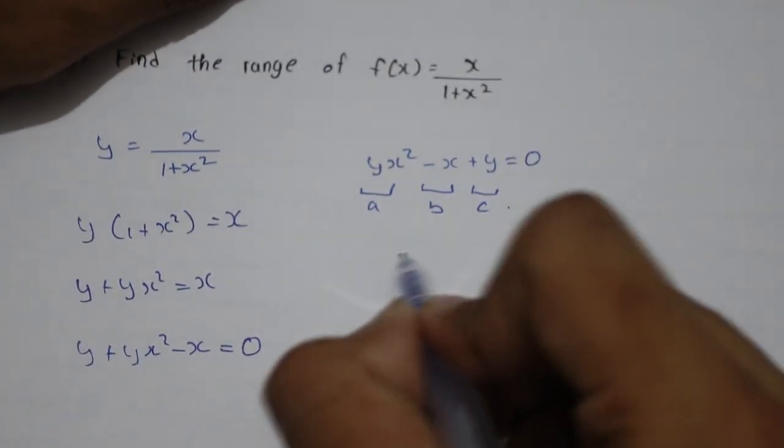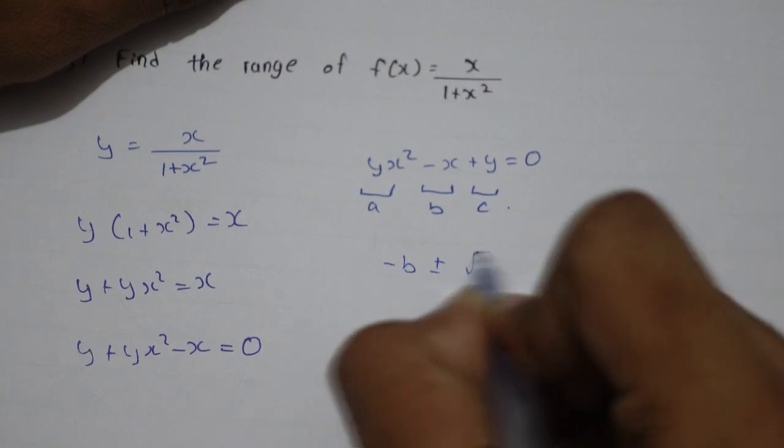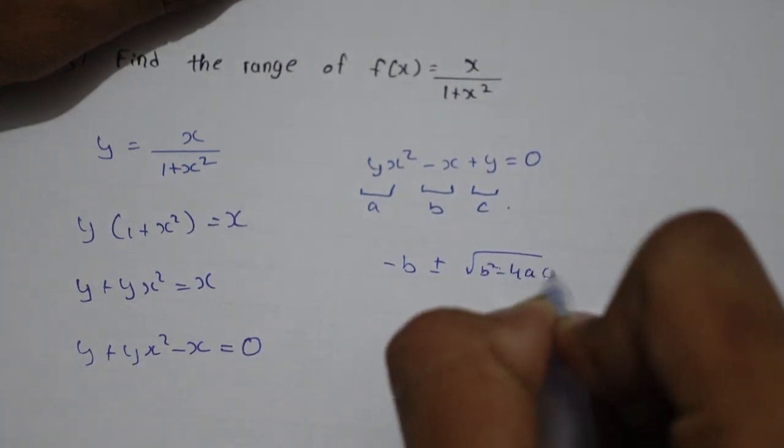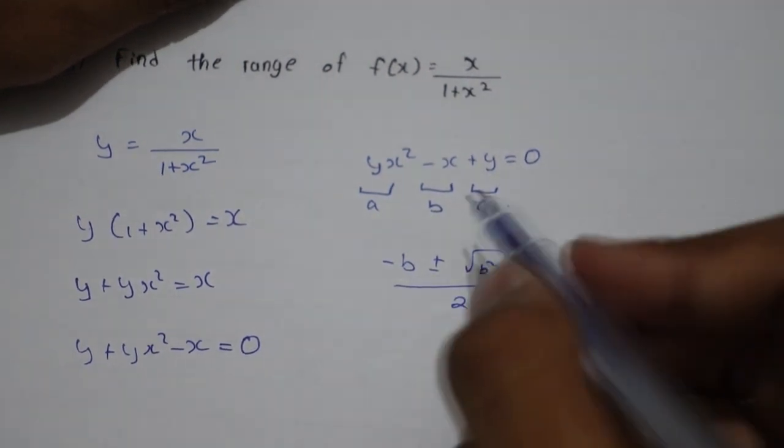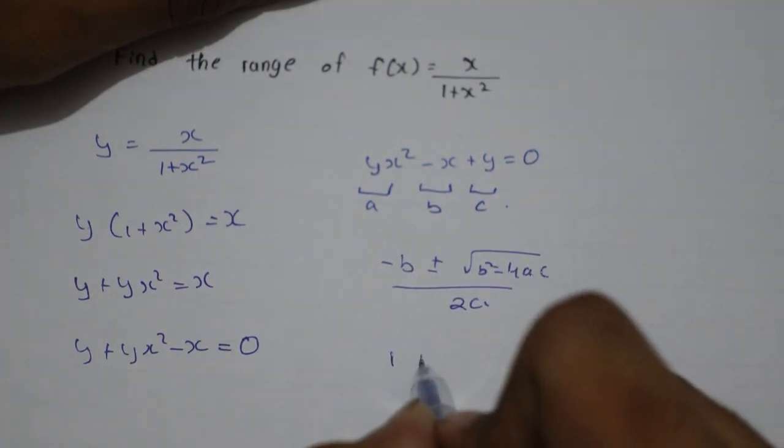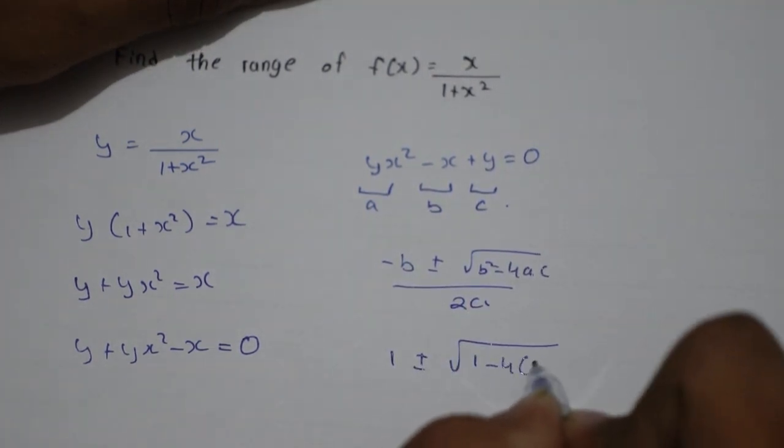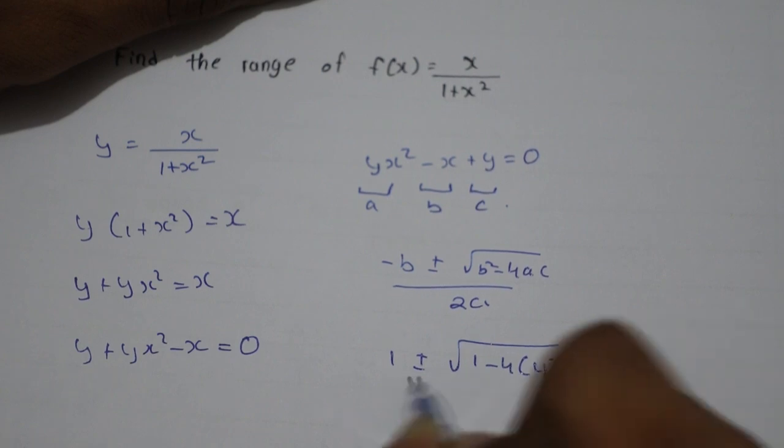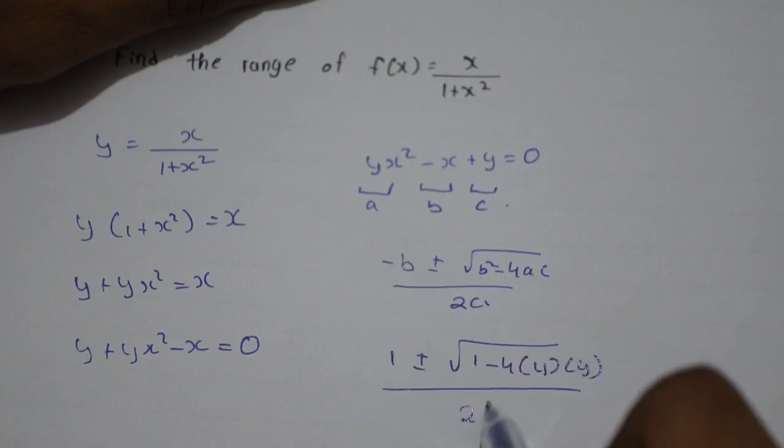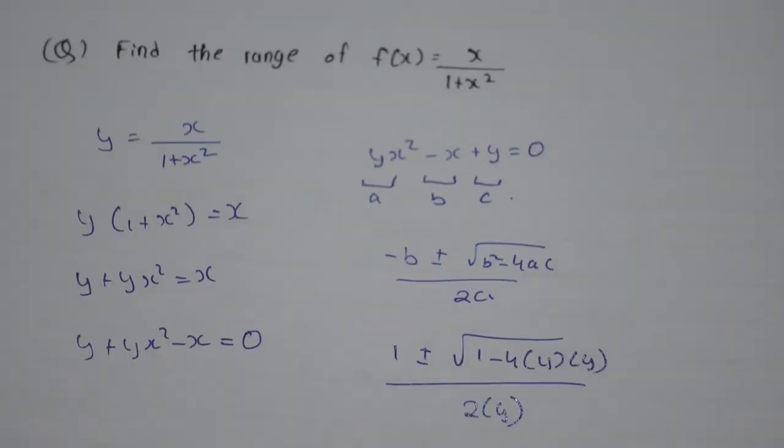And we can use the quadratic formula here: (-b ± √(b²-4ac))/2a. So -b is 1 ± √(b² is 1 - 4ac, and c both are y) by 2a, so 2y. This will be the quadratic formula.